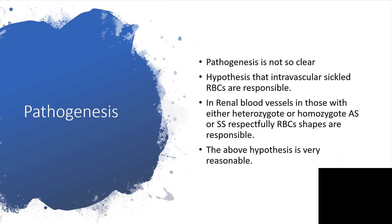The pathogenesis is not entirely clear. The hypothesis is that intravascular sickle red blood cells are responsible, occurring in renal blood vessels in those with either heterozygote or homozygote inheritance — AS or SS respectively. The abnormal red blood cell shapes are responsible, and this hypothesis is very reasonable.